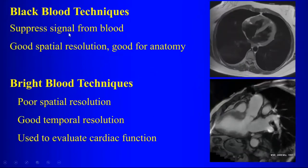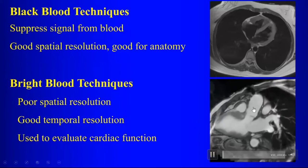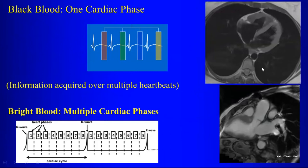Black blood techniques suppress signal from flowing blood and give good spatial resolution — they're good for anatomy. Bright blood techniques have somewhat lower spatial resolution, but the advantage is temporal resolution, which allows us to put together movies to look at cardiac motion and function. With black blood techniques, we look at one cardiac phase, freezing the heart motion for that phase, but the information is acquired over multiple heartbeats. The scanner isn't fast enough to acquire all of this in one heartbeat, so we take information from the same phase of the cardiac cycle across different heartbeats and combine them to generate the image.